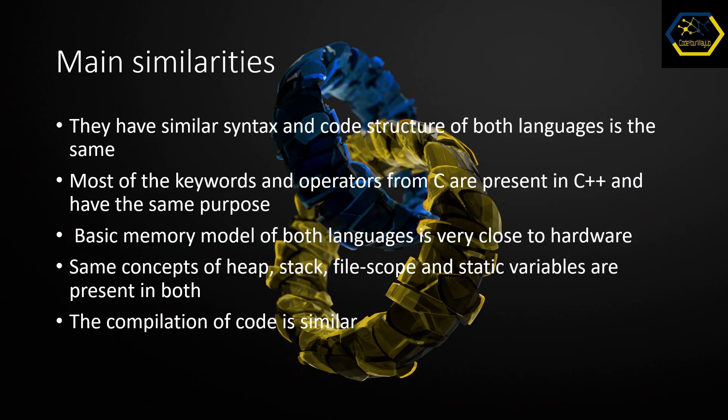So main similarities: they have similar syntax and the code structure of both languages is the same. Most of the keywords and operators from C are still present in C++ and have pretty much the same purpose. The basic memory model of both languages is very close to hardware. The same concepts of stack, heap, file scope, and static variables are present in both, and the compilation of code is very similar.